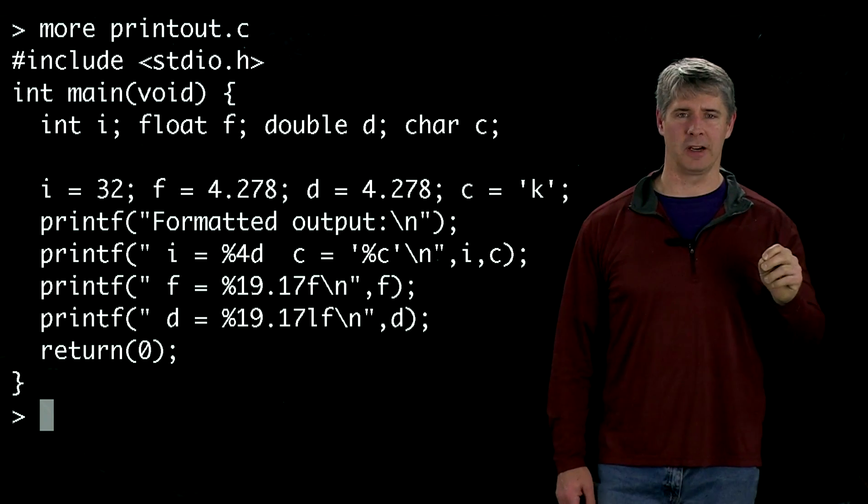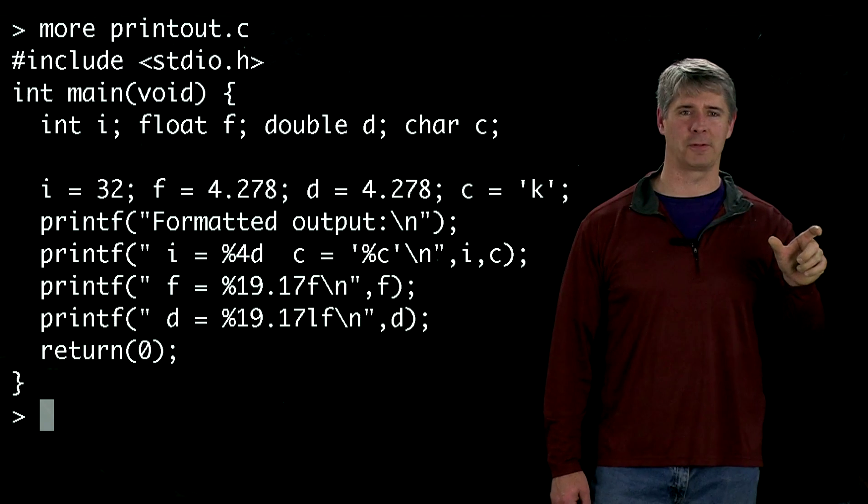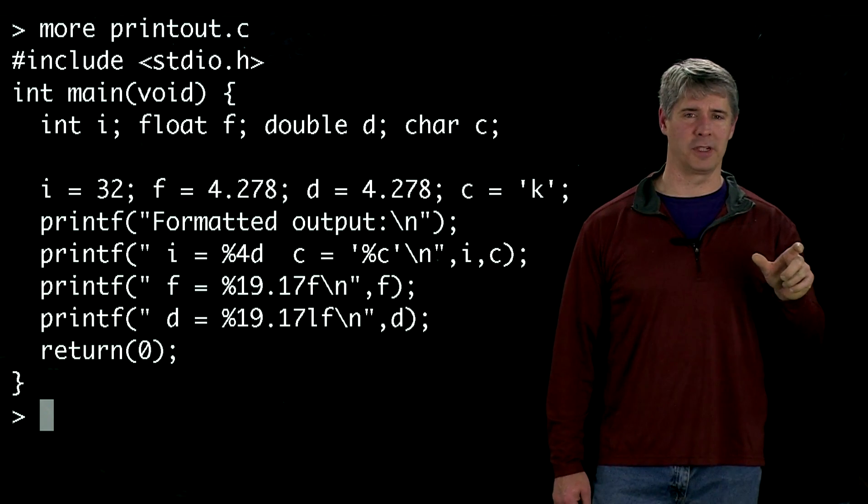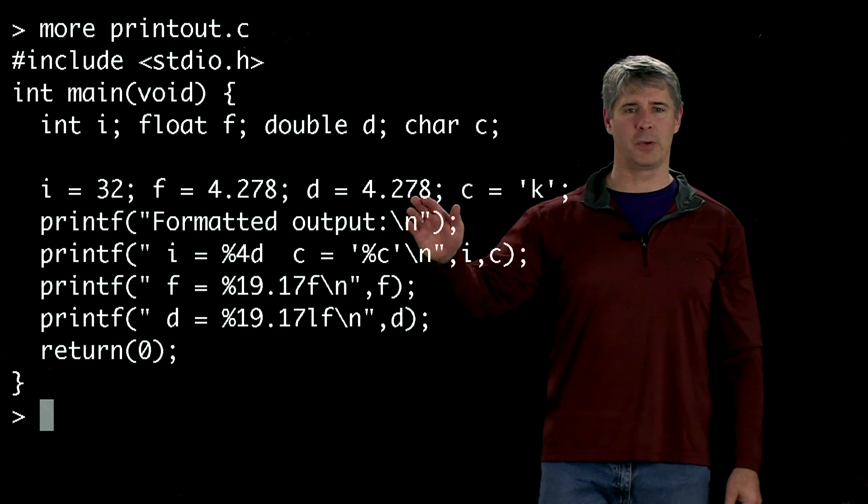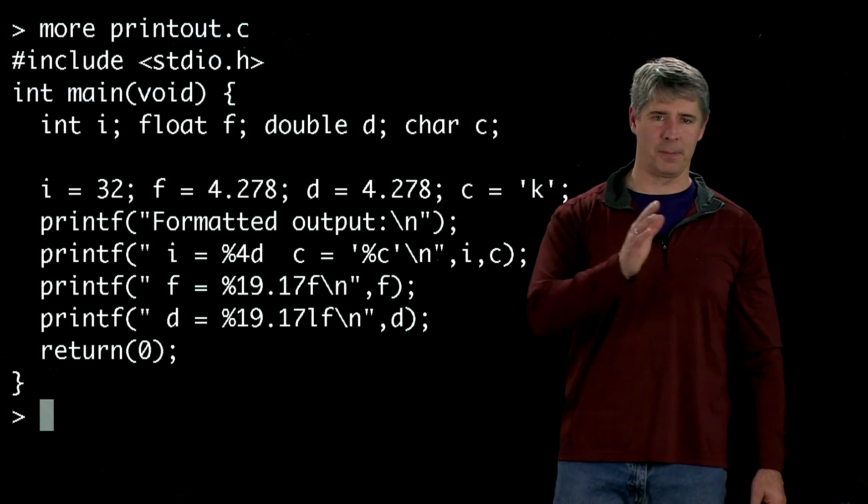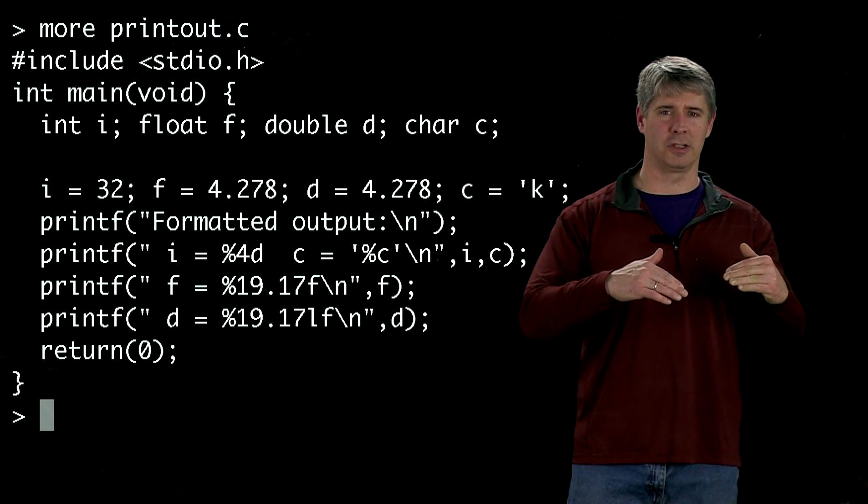And then we have this \n character. That's a special character. When you see the slash, it means what's coming after it is a special character. And here that's interpreted to be new line, so \n means new line. So the first thing we do is we print out formatted output, and then we do a carriage return.